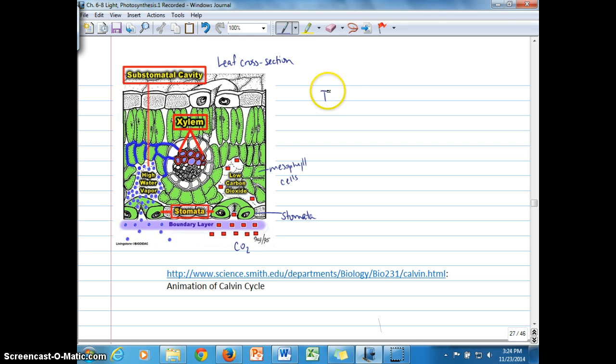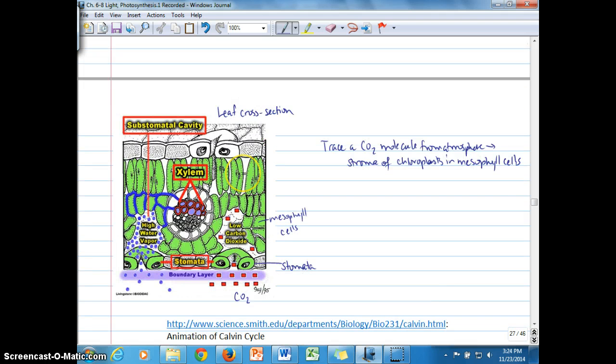What you want to make sure that you can do is trace a CO2 molecule from the atmosphere to the stroma within chloroplasts in mesophyll cells. In doing that tracing, you're going to trace carbon dioxide into the substomatal space, across the cell wall of the mesophyll cell, across the plasma membrane, into the cytoplasm, and then across the outer and inner membranes of the chloroplast all the way to the stroma.